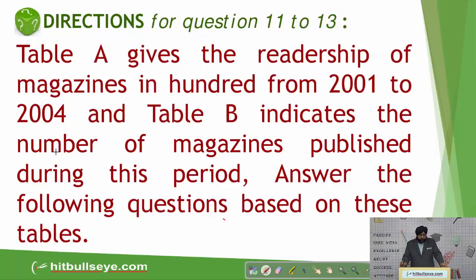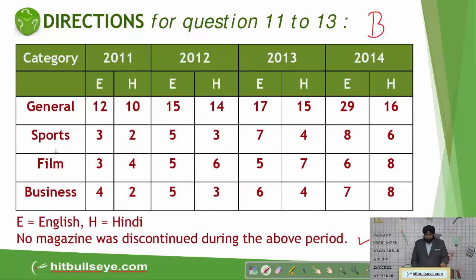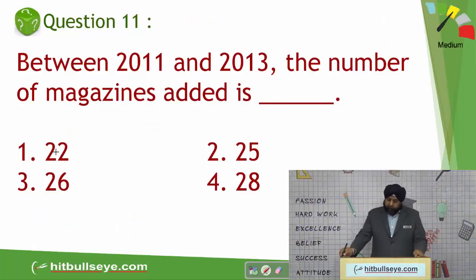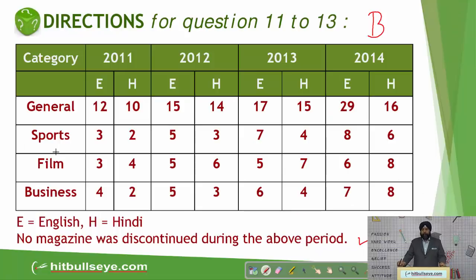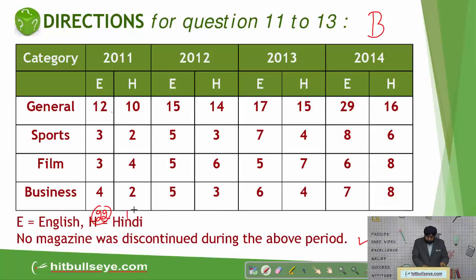Table A gives the readership. Table B indicates the number of magazines in 2001 and 2004 — this is Table A and this is Table B. Let us see the first question: between 2011 and 2013, the number of magazines added is? Table B is to be used. In 2011 the English magazines are 12, 3, 15, 3, 18, 4, totaling 22; and Hindi magazines are 10 plus 2 = 12, plus 4 = 16, plus 2 = 18. So total number of magazines in 2011 is 22 plus 18 = 40.